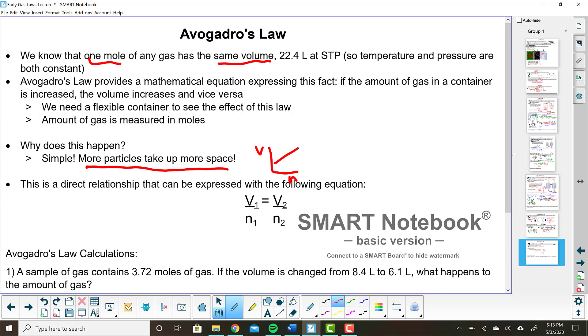Every single time you blow up a balloon, you prove this law. Because you are adding particles and the volume increases. Because we have a flexible container in the balloon. So just like the previous direct relationships, we have another division equation here. And this is Avogadro's law. V1 over N1 equals V2 over N2. Now, can we do some math with this equation? Well, let's see.